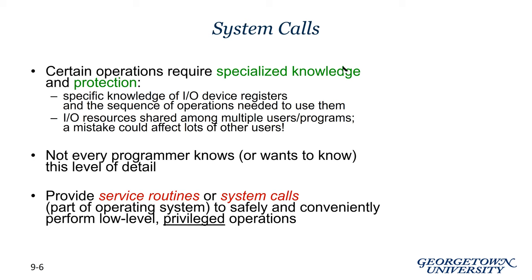A system call is a particular type of subroutine call. Certain operations require specialized knowledge and protection — we already saw a really good example of this with the IO systems. If you the programmer wanted to print something to the screen, it's great to just say cout and pass in a string. However, if you had to be privy to all the low-level details of the IO system — the data register and the status register of the display console IO device — that would make programming print statements a lot more tedious. For that reason, it's important that we have some sort of intermediary managing system to obfuscate those lower-level details from higher-level processes and programmers.